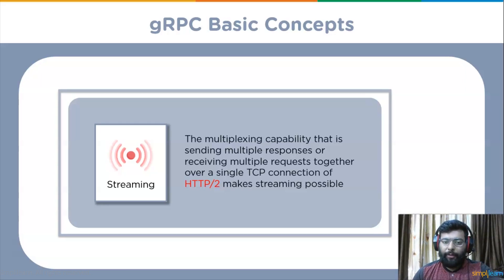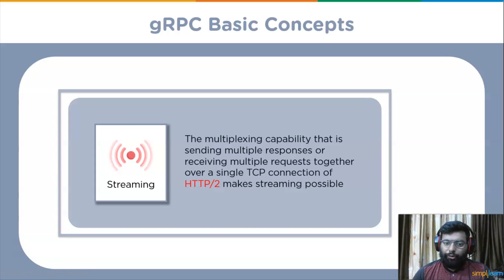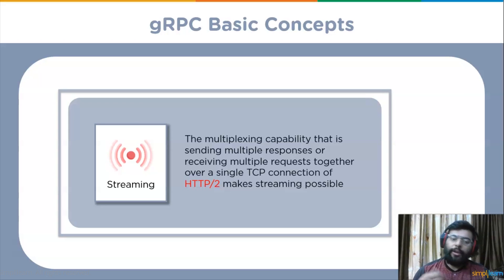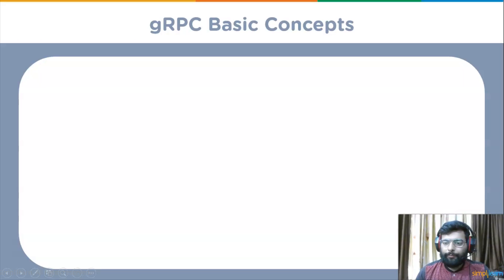The next type is client streaming RPCs, where the client sends a stream of data sequences to the server, which then processes and returns a single response to the client. The third type is bi-directional streaming RPCs — two-way streaming where both client and server send a sequence of messages to each other without waiting for a response. Next we will move to HTTP/2.